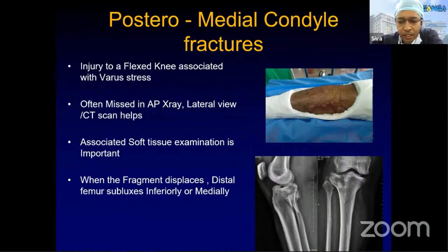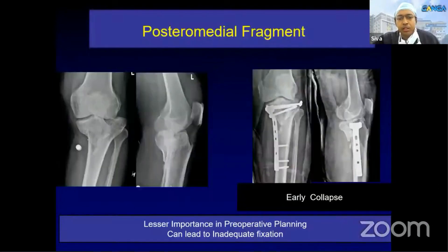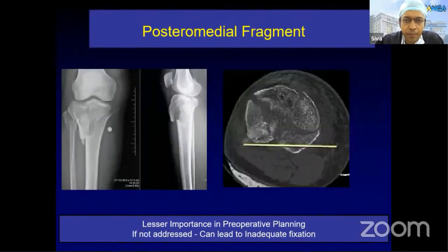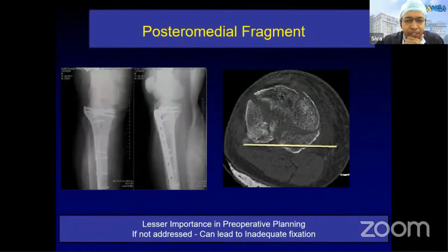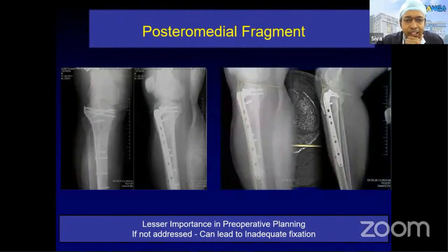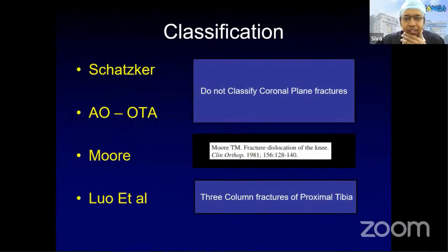When these fragments are left unnoticed or not given adequate planning, they can displace along with the distal femur either inferiorly or medially. Preoperative planning has to be very thorough. We can see a similar fracture that can lead to early collapse if not fixed properly, or a bicondylar fracture where a small posteromedial fragment, though seen on CT scan, if addressed only with a lateral plate, can lead to late post-operative collapse.